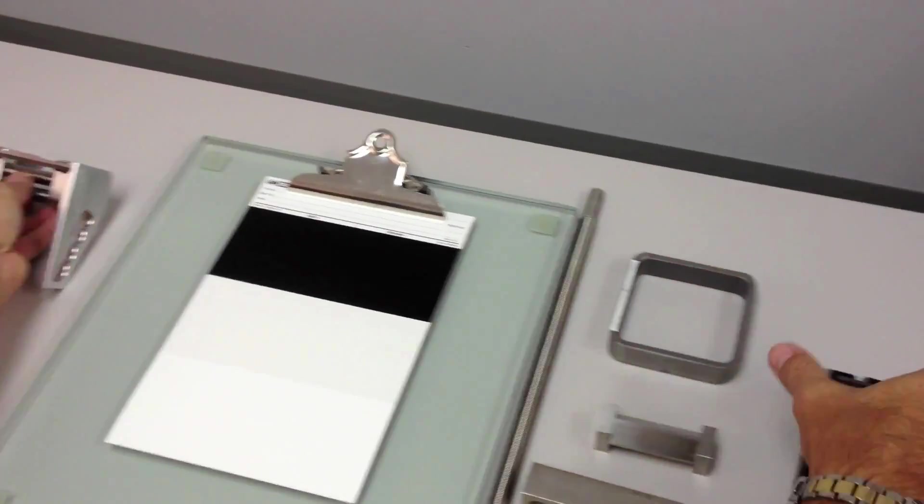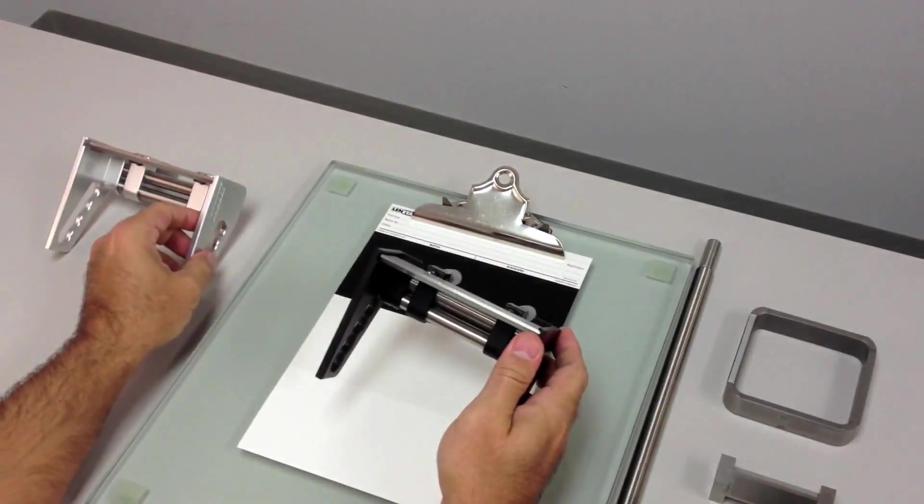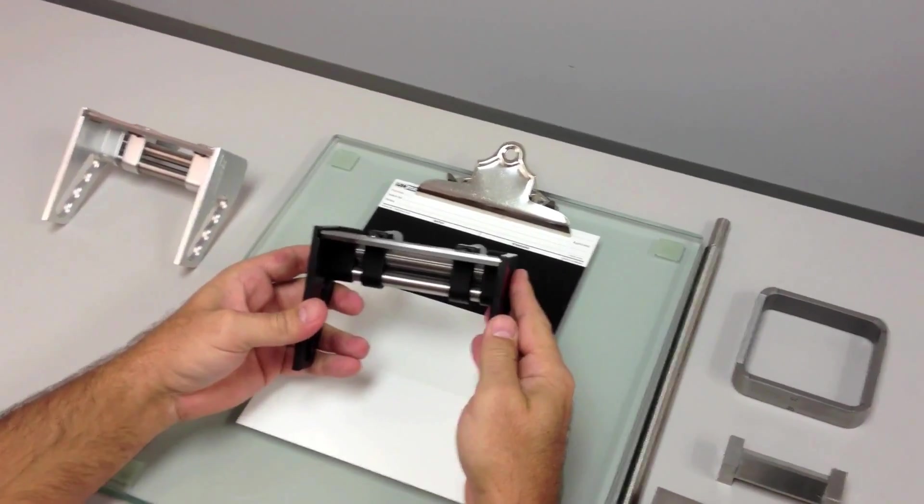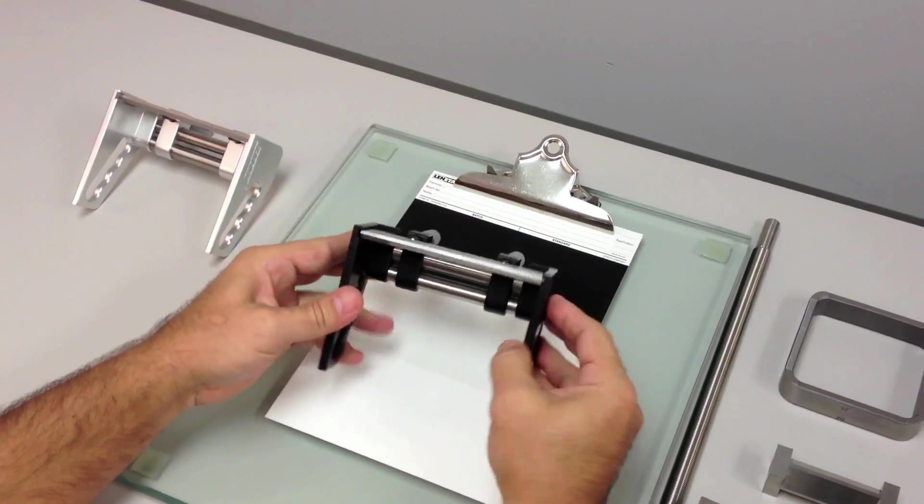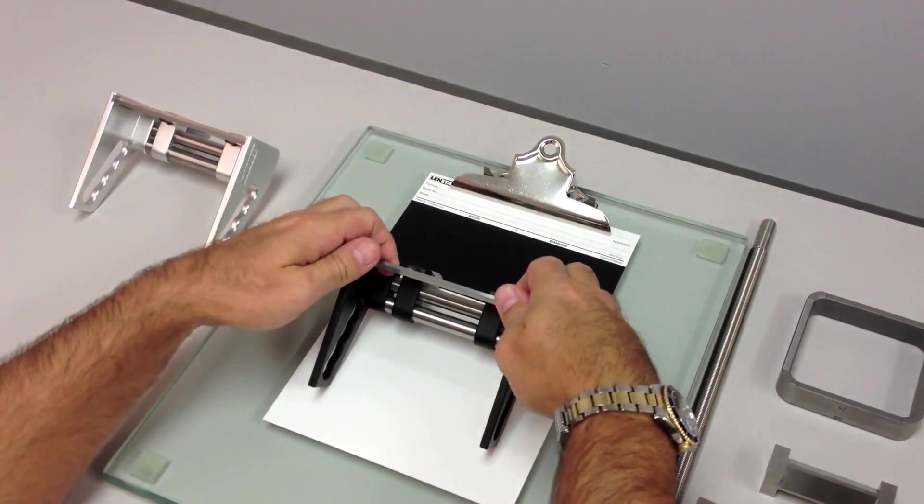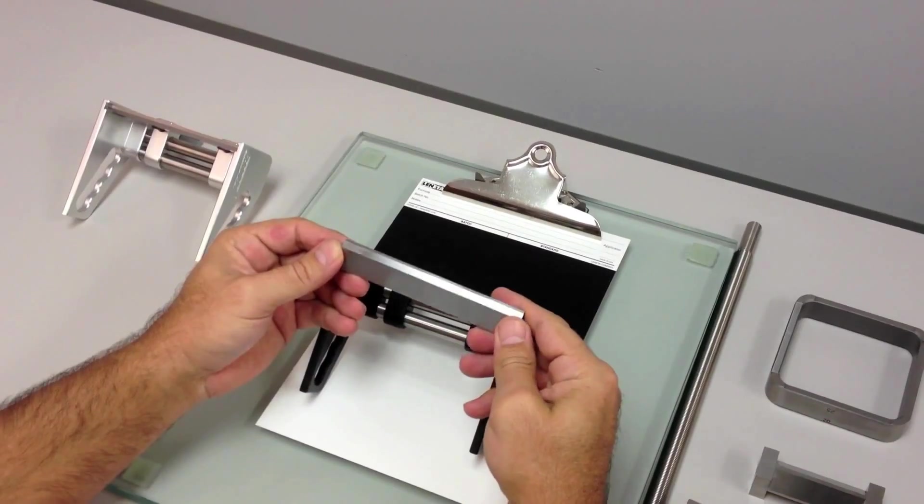Then we have the Teflon coated applicator, which has the same function, but what makes this one different is that it's Teflon coated, which enables easy cleanup. The blade gets removed and you can clean it in the proper solvent.